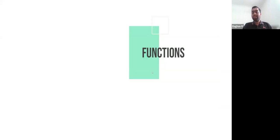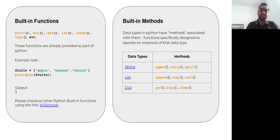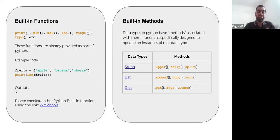Moving on, there is something called functions that Python offers. Functions are basically a block of code that has some purpose and that has either already been defined or you define it on your own. Looking at already-defined functions — the built-in functions in Python — there are functions like print, min, max, len, range, type, etc. We have been using print throughout this video. Print is a built-in function that serves the purpose of printing something on the screen.